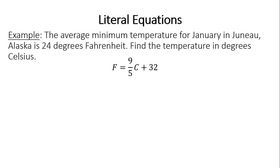So consider the Fahrenheit Celsius formula. This would be considered a literal equation because it has both F in it and C. In the example here, the average minimum temperature for January in Juneau, Alaska is 24 degrees Fahrenheit. Let's find the temperature in degrees Celsius.